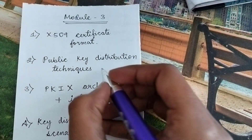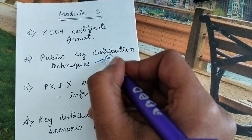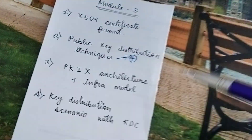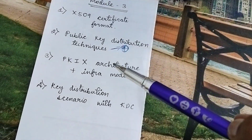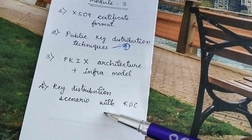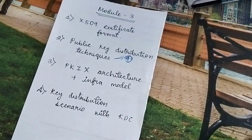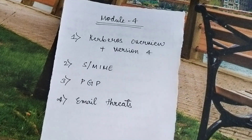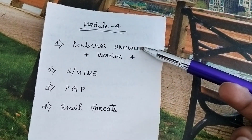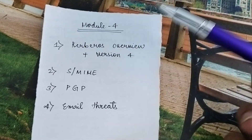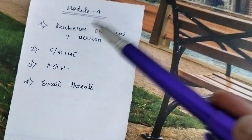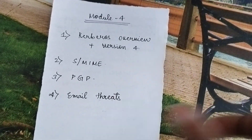Third module — this is a sure question. Public key distributions: it has four points, four techniques or four schemes. I've written about all four schemes in the written notes — that solution is not in the PDF. Then PKIX architecture and scenario with KDC — you have to learn all of these. Kerberos overview is a different question; version 4 is a different question. Learn everything about S/MIME, PGP, and email threads — whatever is there in the solutions PDF related to these modules.